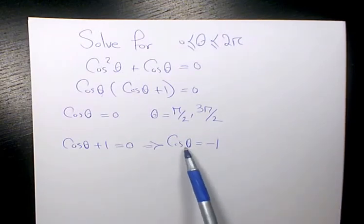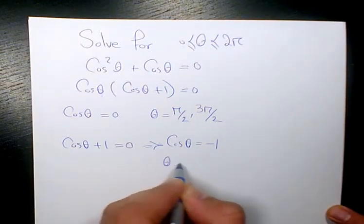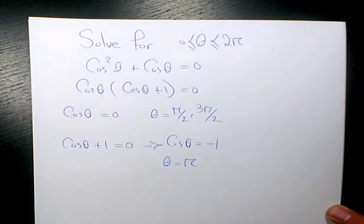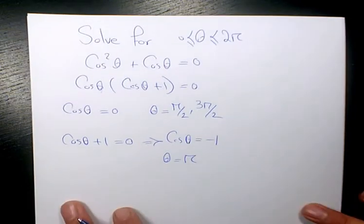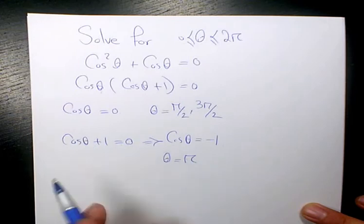What about here? Here cosine theta equals negative 1. We know when theta equals π, cosine π is negative 1. So we have two answers for the first equation and one answer for the second one.